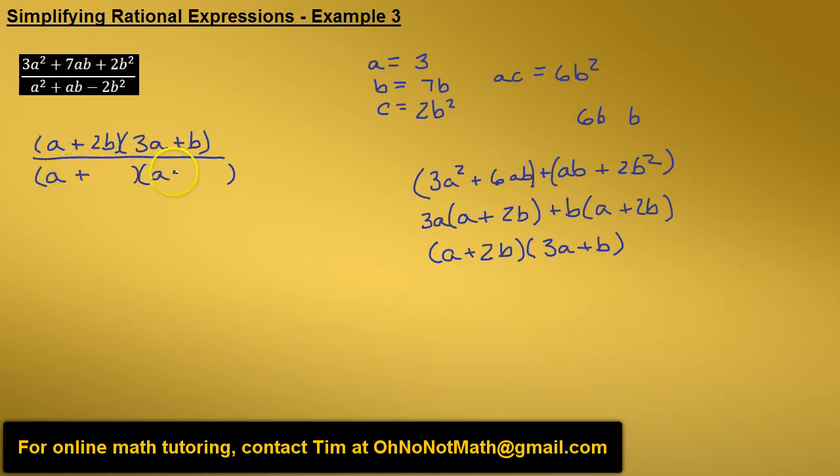This negative sign tells us that we're going to have a positive and a negative. What can we multiply together to get negative 2b squared and add together to get positive b? That would be positive 2b and negative b. 2b times negative b is negative 2b squared, and then positive 2b minus b will give us the b. So our positive term is going to be 2b and our negative term is going to be b. We factored the denominator.